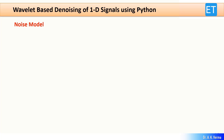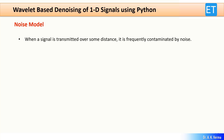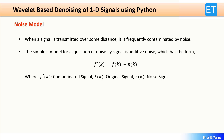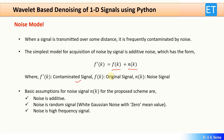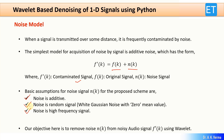Now let's see some theoretical background. When a signal is transmitted over some distance, it is contaminated by noise. Your signal f(k) is corrupted by noise n(k), and f'(k) is your contaminated signal. The basic assumptions about noise n(k) are that it is additive in nature, it is random white Gaussian noise with zero mean, and it is of high frequency. Our objective is to remove this noise n(k) from the signal f'(k) using wavelet transform technique.